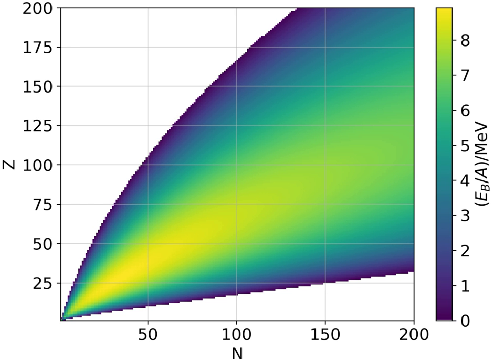An analogy to the nuclear force is the force between two small magnets. Magnets are very difficult to separate when stuck together, but once pulled a short distance apart, the force between them drops almost to zero. Unlike gravity or electrical forces, the nuclear force is effective only at very short distances. At greater distances, the electrostatic force dominates, and the protons repel each other because they are positively charged, and like charges repel.